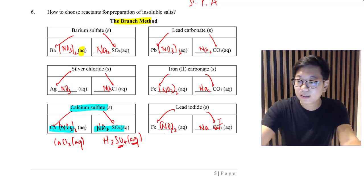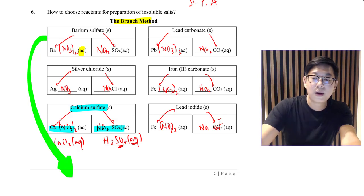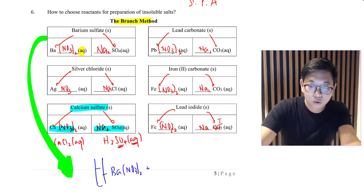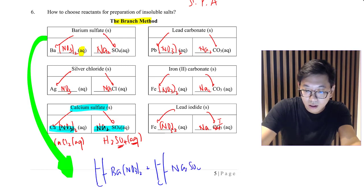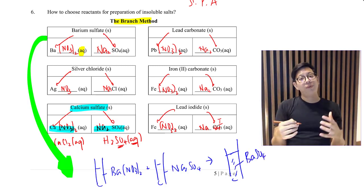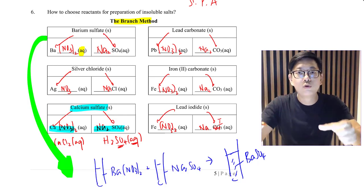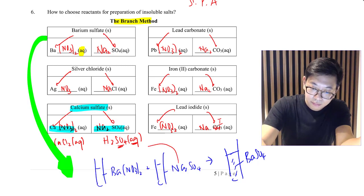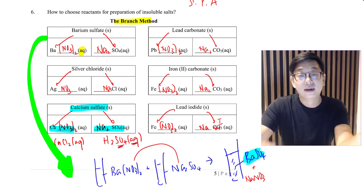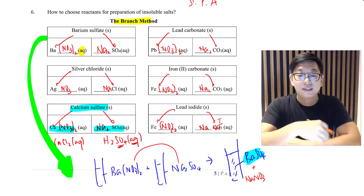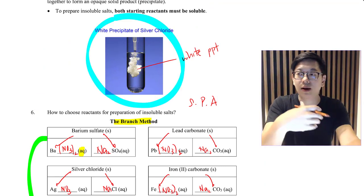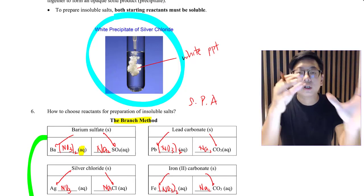To illustrate with barium sulfate: take barium nitrate solution and add it to sodium sulfate solution. When mixed, you get a precipitate of barium sulfate. Barium sulfate is not the only product — the other product is sodium nitrate (NaNO₃), which remains in solution. You will see a white precipitate in a colorless solution. The barium sulfate is the white precipitate; the sodium nitrate is the colorless solution. For transition metals, you get colored solutions.